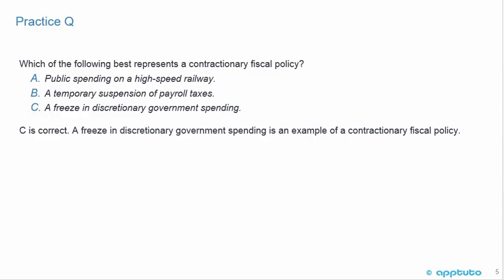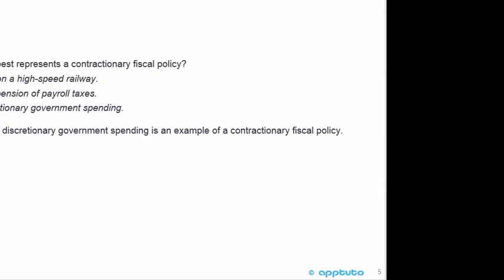A temporary suspension of payroll taxes would reduce taxes, increasing savings and consumption — that's going to expand the economy. So the answer is C, a freeze in discretionary government spending. Freezing spending means less spending — that's the contractionary fiscal policy. Quite an easy question, and that's the last slide for this LOS.